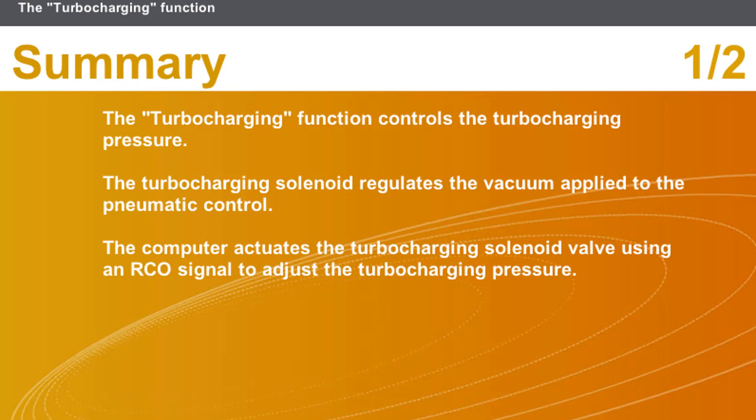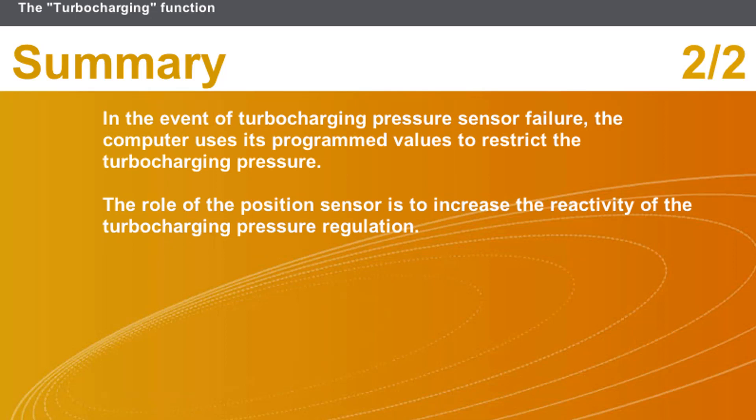The turbocharging function controls the turbocharging pressure. The turbocharging solenoid regulates the vacuum applied to the pneumatic control. The computer actuates the turbocharging solenoid valve using an RCO signal to adjust the turbocharging pressure. In the event of turbocharging pressure sensor failure, the computer uses its programmed values to restrict the turbocharging pressure. The role of the position sensor is to increase the reactivity of the turbocharging pressure regulation.